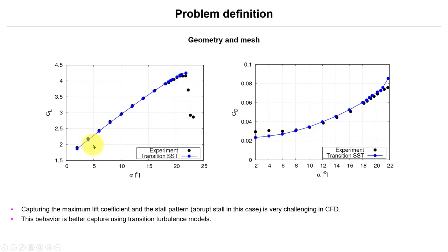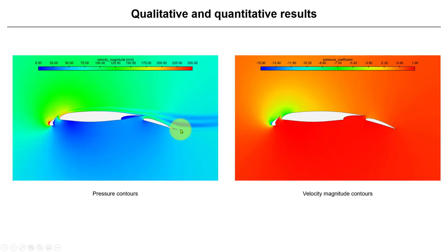To capture that was very difficult. Usually you need to use this kind of transition model. We're somewhere here, the case running close to the maximum stall. See that also we have a very good agreement when it comes to the experiment. Let's take a look at some fields, some colors, besides the quantitative results.